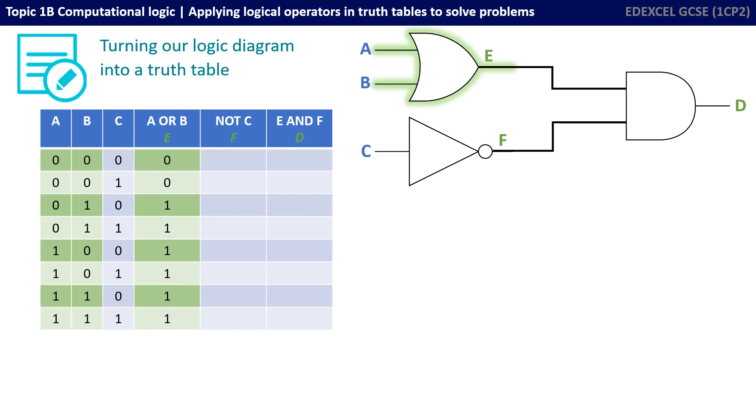The OR gate takes in A and B, and remember, either of those should be 1 and the output E should be 1. So, you can see I fill that out here with zeros and ones as appropriate.